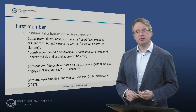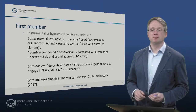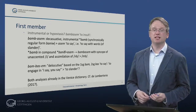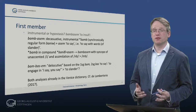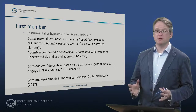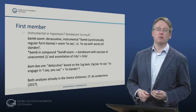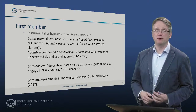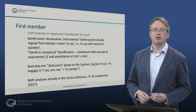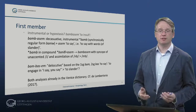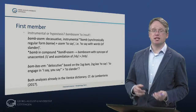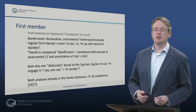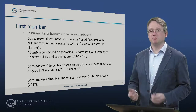Bamb asem – to insult – could be a form with an instrumental bamb beside the synchronically regular form baniv, and the verb asem – to say, meaning to say with words of slander. Bamb could have arisen in the compound baniv asem, which then went to bamb asem with syncope of unaccented i and assimilation of nb to mb. Alternatively, it could be based on the first and second singular of the verb to say – bamb and bas – meaning to engage in I say, you say, meaning to slander. Both analyses are already proposed in the Vanus dictionary from 1836.